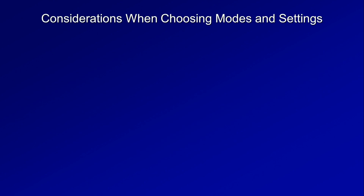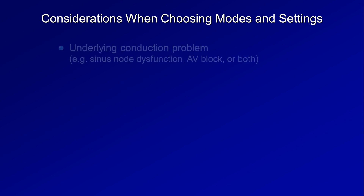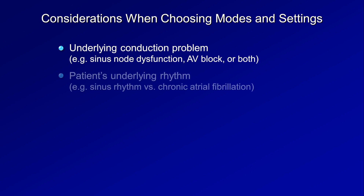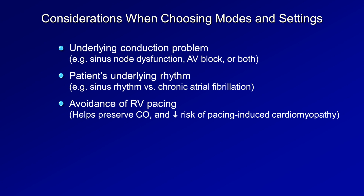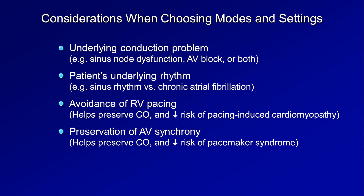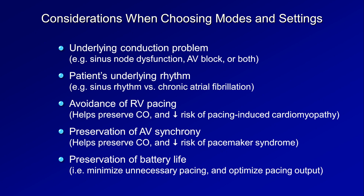With all these modes and settings, one might wonder how a cardiologist chooses them for a specific patient. It would take an electrophysiology fellowship to fully understand it, but considerations include the patient's underlying conduction problem and underlying rhythm, the desire to avoid RV pacing — which helps preserve cardiac output and decreases the risk of pacing-induced cardiomyopathy — and to preserve AV synchrony whenever possible, which also helps preserve cardiac output and decreases the risk of pacemaker syndrome. Lastly, preserving battery life by minimizing unnecessary pacing and optimizing pacing output.